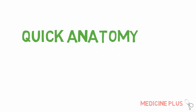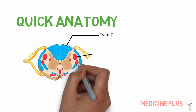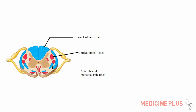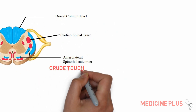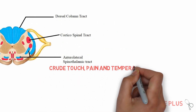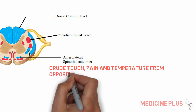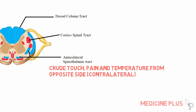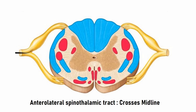In transverse section, from anterior to posterior, we can find the anterolateral spinothalamic tract, corticospinal tract, and dorsal column tract. The anterolateral spinothalamic tract carries sensation of crude touch, pain, and temperature from the contralateral side. This is because these fibers...